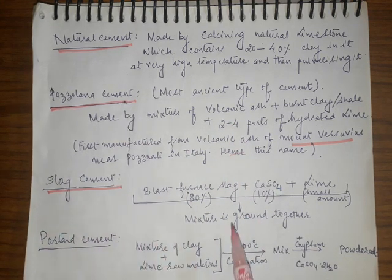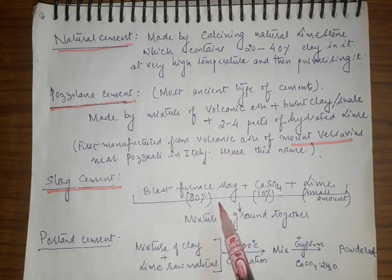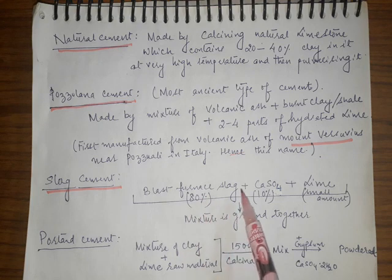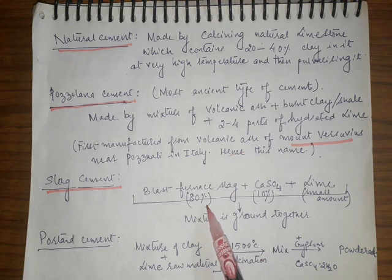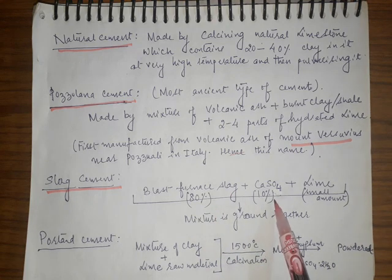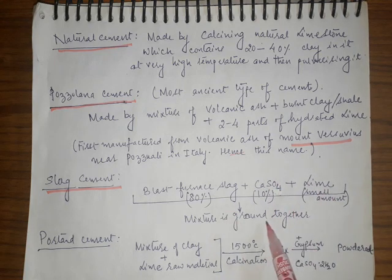Slag cement is mainly composed of blast furnace slag. In this process, 80% of the slag is mixed with 10% of calcium sulphate and a small amount of lime. This whole mixture is finely ground together and the product obtained is known as slag cement.